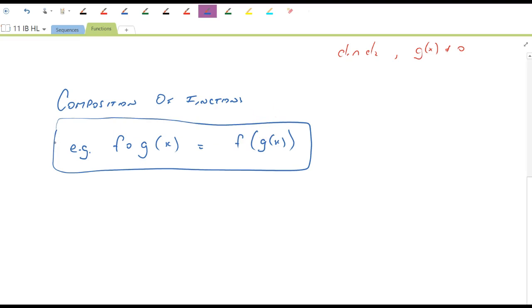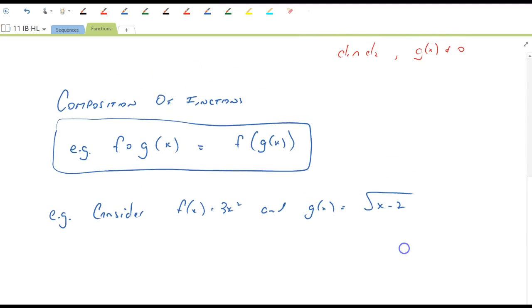It takes one function's output and puts it into another function as its input. So we look at processing a function within a function, if you like, or a function's output values as the input values for another function. So let's have a look at an example. We'll consider f of x equals 3x squared, and g of x equals the square root of x minus 2. So the domain here is all real, domain here is all x greater than or equal to 2.